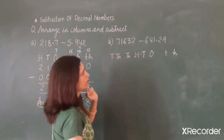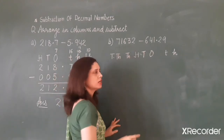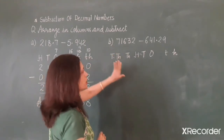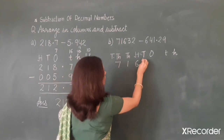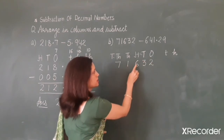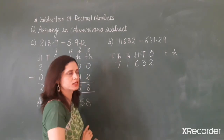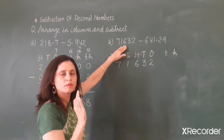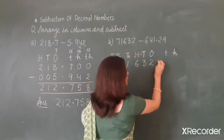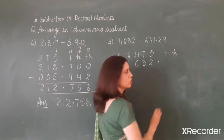Now come to the next example. We have to subtract two numbers: the first number is 71,632 and the second is 641.29. First, arrange 71,632 in a column: digit 2 at 1's place, 3 at 10's place, 6 at 100's place, 1 at 1000's place, and 7 at 10,000's place. This number has only a whole part, so we put a decimal point after it, and since no digit is given at the 10ths and 100ths places, we write 0's there.